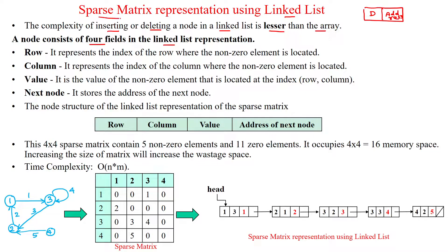The four fields of a node are: the row number, which indicates the row index; the column number of the given value; the value, which is the non-zero element in the sparse matrix; and the next field, which holds the address of the next node.